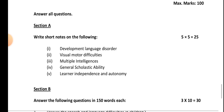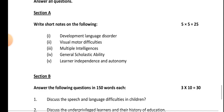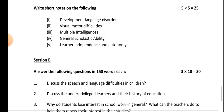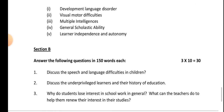In Section A, write short notes on the following — you can give short notes for 5 to 25 marks. The questions are: 1) Developmental language disorder, 2) Visual motor difficulties, 3) Multiple intelligence, 4) General scholastic ability, and 5) Learner independence and autonomy.